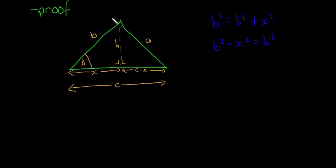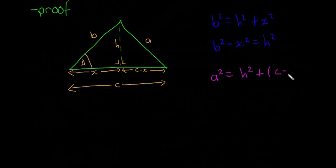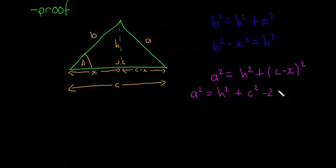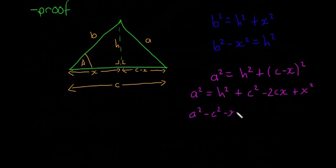Now applying Pythagoras to the right triangle: a is the hypotenuse and the base is (c − x), so a² = h² + (c − x)². Expanding (c − x)² gives c² − 2cx + x², so a² = h² + c² − 2cx + x².